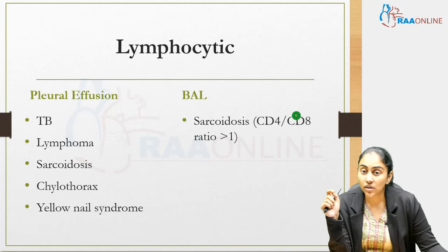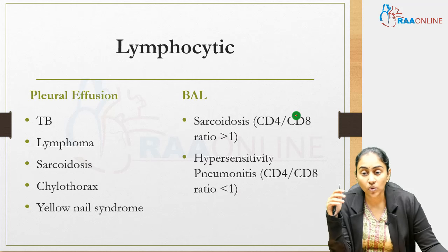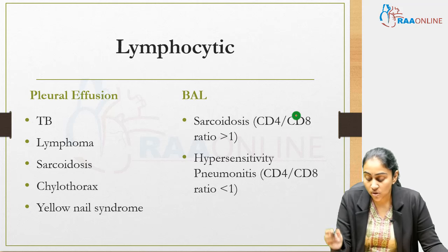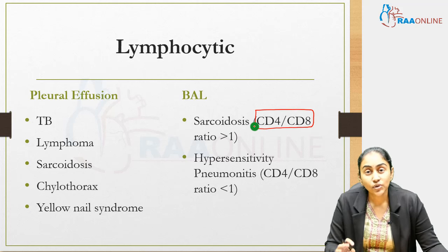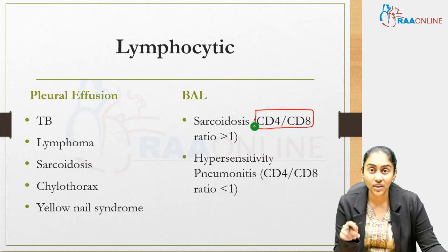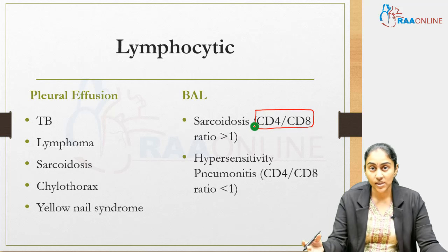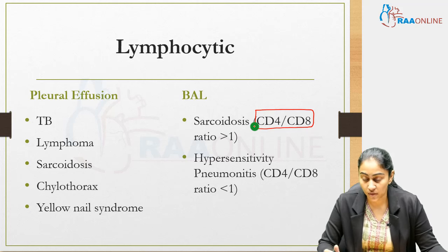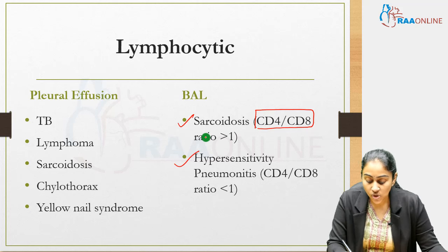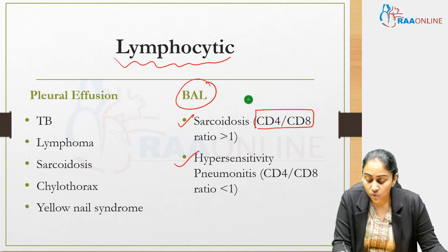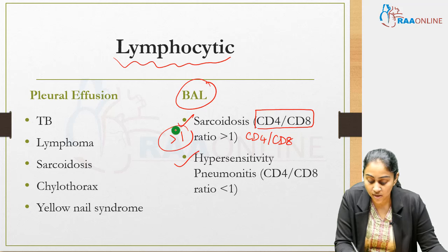Lymphocytic BAL usually has two differentials: sarcoidosis or hypersensitivity pneumonitis. To differentiate: if the CD4:CD8 ratio is greater than one, it is sarcoidosis; if less than one, it is hypersensitivity pneumonitis. A memory aid — H comes before S alphabetically, so H (hypersensitivity pneumonitis) has the lower number and S (sarcoidosis) has the higher number.